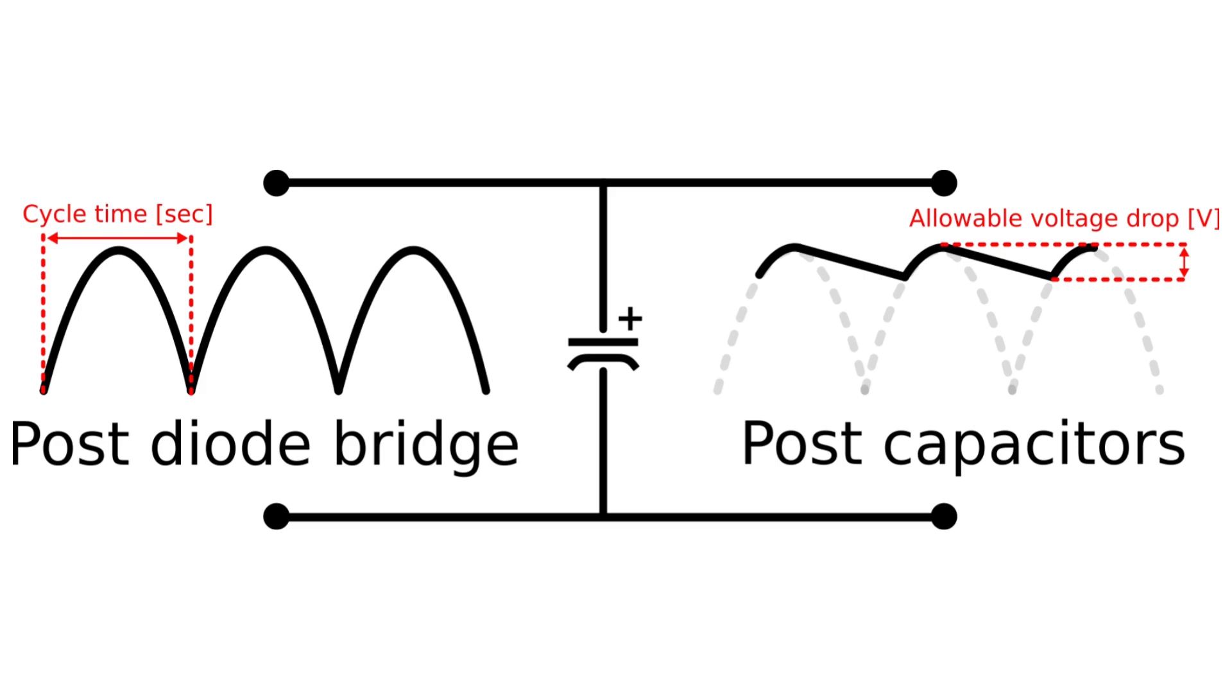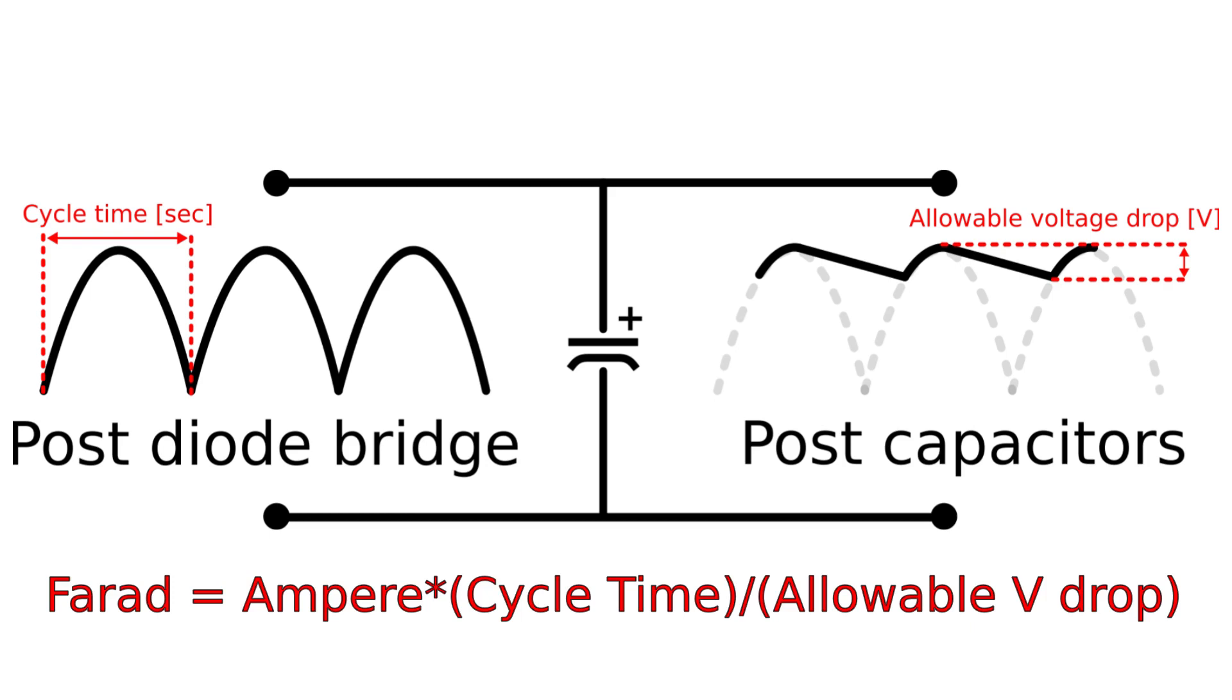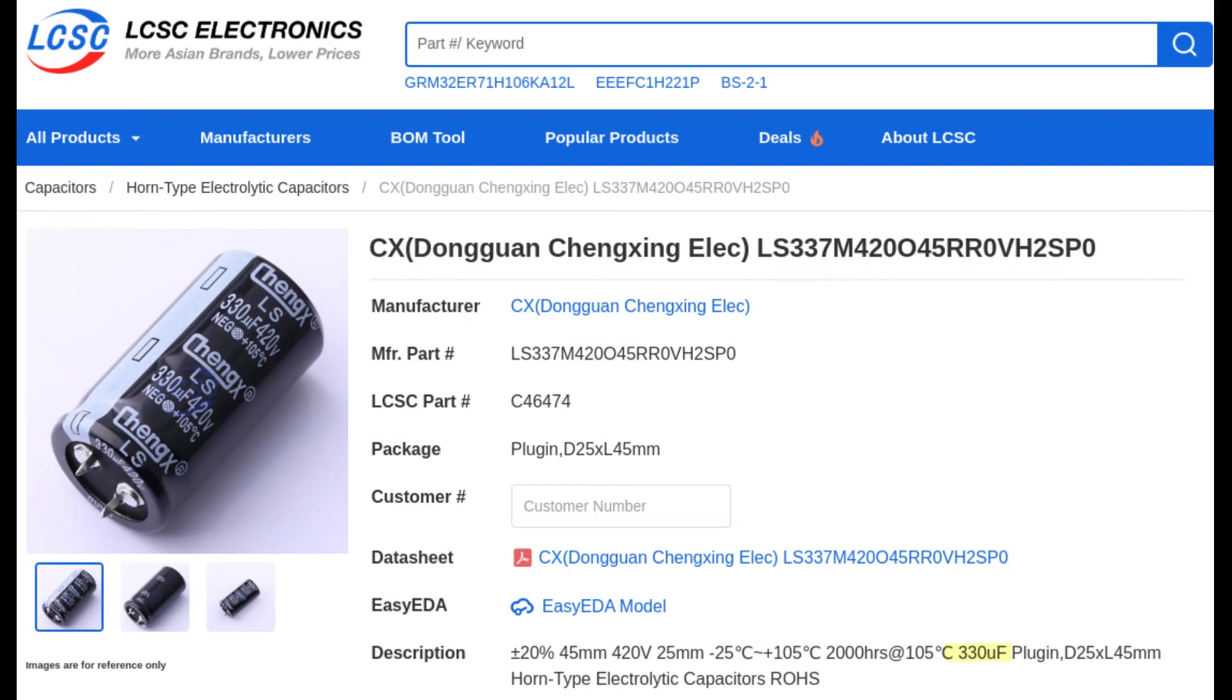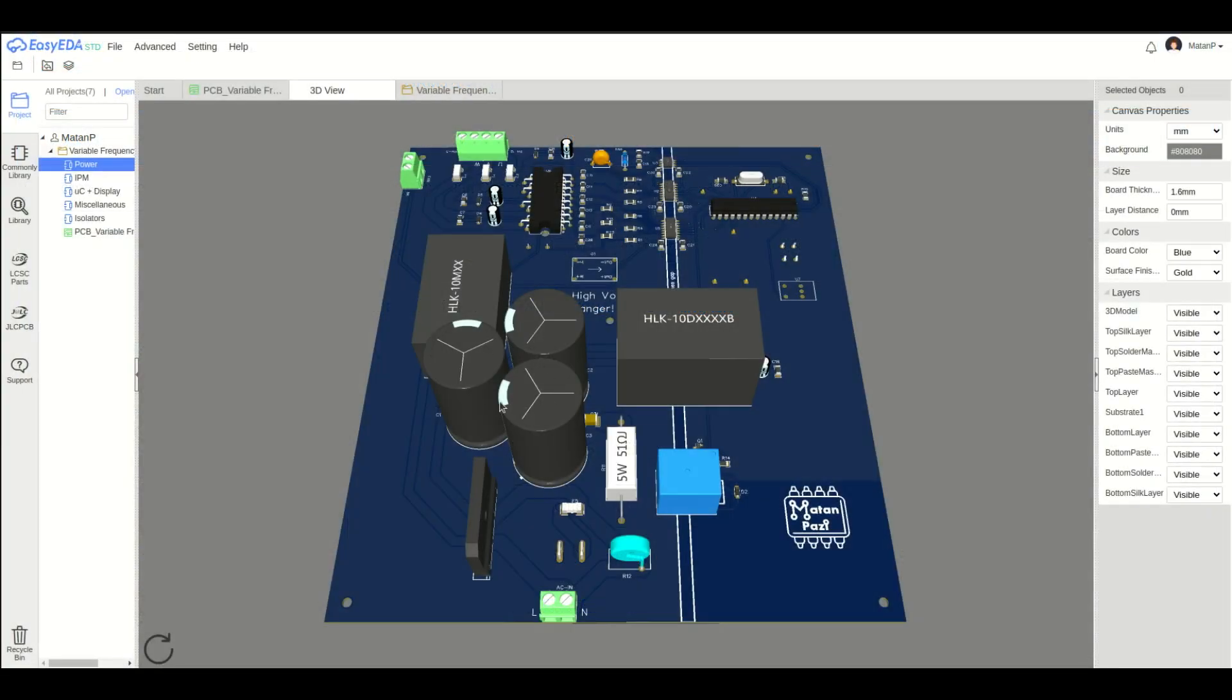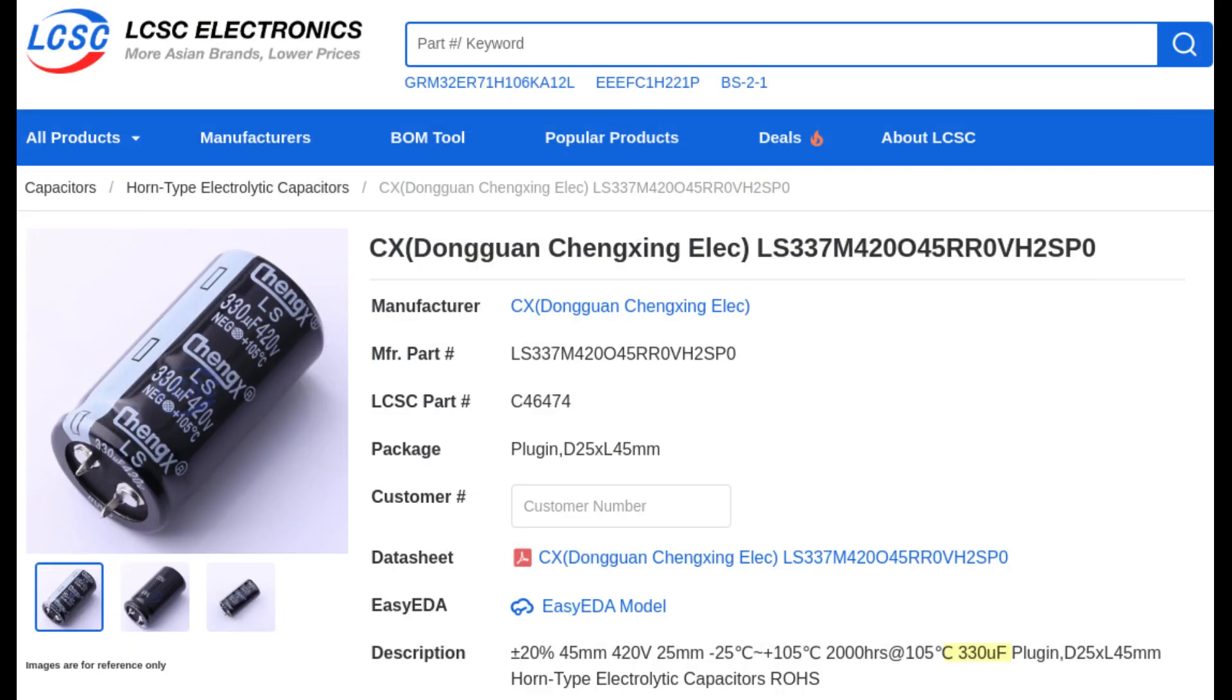I first calculated how much capacitance I needed, and for that I used this equation. I found these capacitors, and decided that three of them would be enough, since they're pretty expensive and take up quite a lot of space. Hopefully, the voltage drops won't significantly deteriorate the VFD's performance.